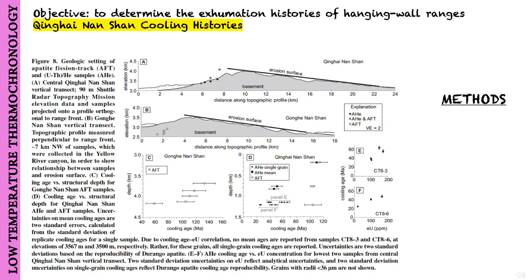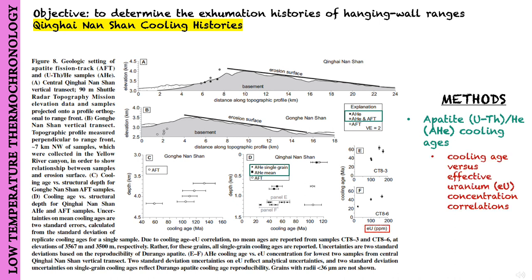For the methods, they used apatite uranium-thorium-helium thermochronology, which provides cooling ages. On appropriate samples, they determined correlations between cooling ages versus effective uranium concentrations, which enable well-constrained inverse modeling of time-temperature history. Finally, they performed apatite fission track analysis, which is also able to reveal the thermal history of rocks.